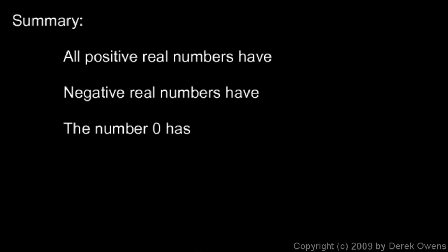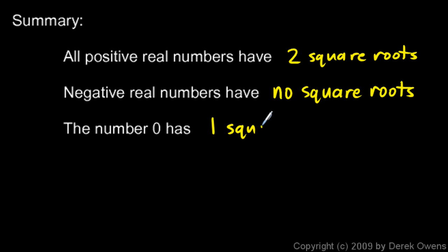So a quick summary here of what we've looked at so far. All positive real numbers have two square roots. One positive and one negative. Negative real numbers have no square roots. And the only thing that's different is zero. Zero has one square root. And specifically, you can probably tell, the square root of zero is simply zero.